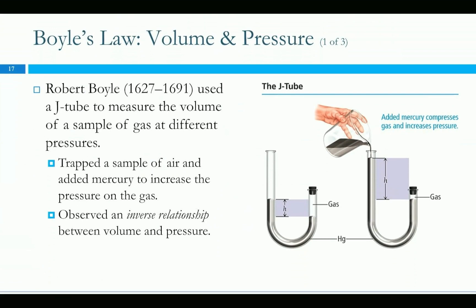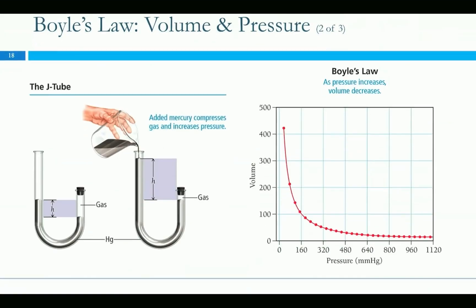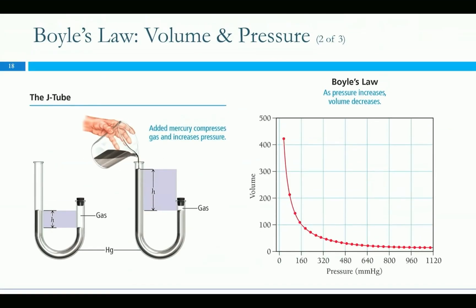I brought up the simulation because we talked about Boyle's Law. This is the experiment basically that Robert Boyle did: he had some amount of gas trapped in a tube, he added mercury to it, and as he adds more mercury to one side — mercury by the way is very dense — this gas can't go anywhere and gets more and more compressed. We can describe the pressure based on the height of the column of mercury that's squishing it.